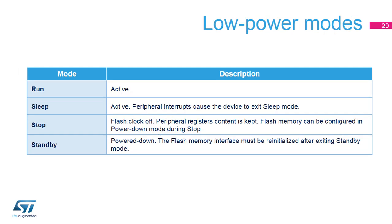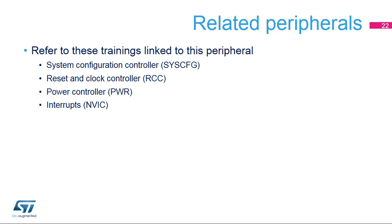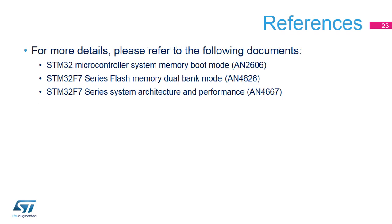This shows a summary of the Flash Memory interface states in each power mode. Flash Memory performance is almost linear with frequency using the ART Accelerator or Cortex-M7 instruction and data cache. The CoreMark score is 1082 at 216MHz, corresponding to roughly 5 CoreMark per MHz, when executing from the ITCM interface with instruction cache, data cache, and prefetch buffer enabled, or when executing over the AXIM interface with the Cortex-M7 L1 cache enabled. Please refer to the listed application notes about STM32F7 microcontroller execution performance, the dual bank feature, and system memory boot mode for more details.